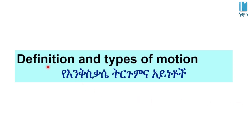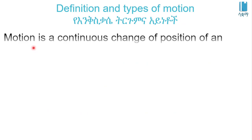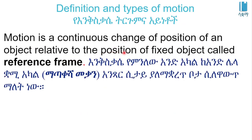Welcome to this video: Definition and Types of Motion. Motion is the change of position with time. More specifically, motion is a continuous change of positions of an object relative to the positions of a fixed object called a reference frame.